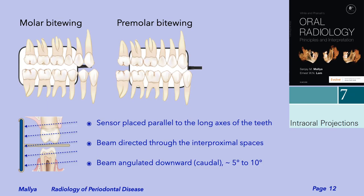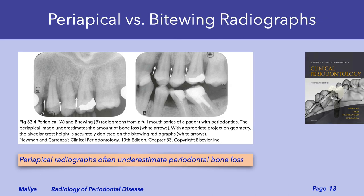For a quick review of the bitewing technique, we make separate projections for the premolar and molars. The sensor is placed parallel to the long axis of the teeth. The beam is directed through the interproximal spaces and directed downwards at an angle of approximately 5 to 10 degrees. Assessment of the interdental bone level in the posterior dentition is better done on bitewing radiographs.